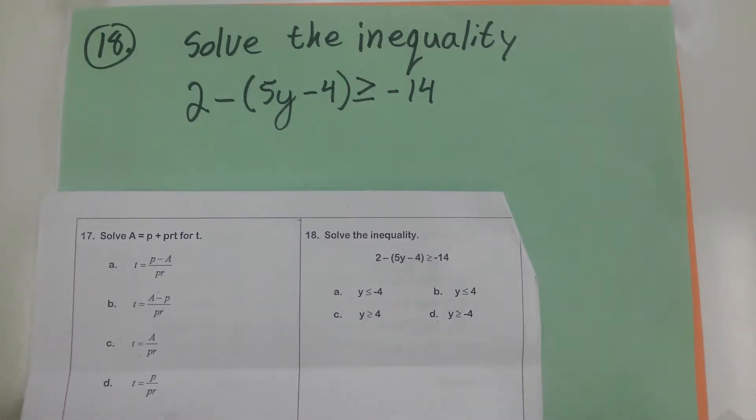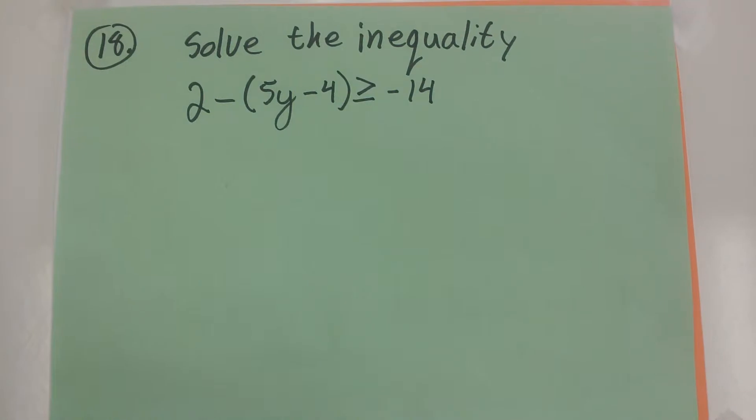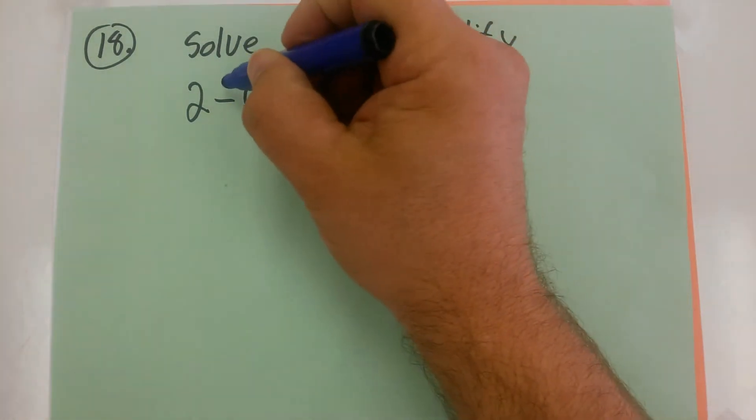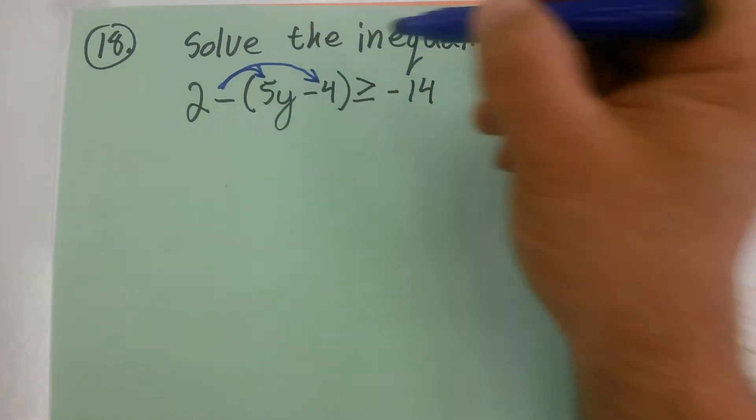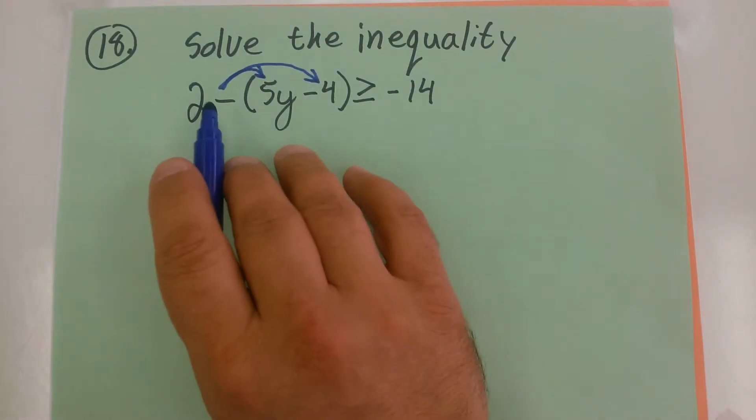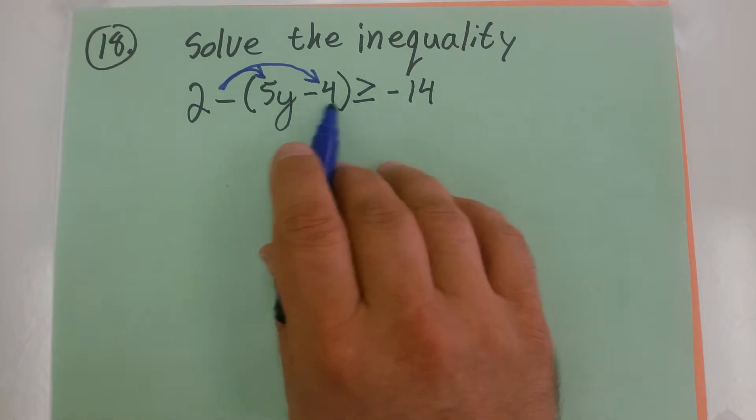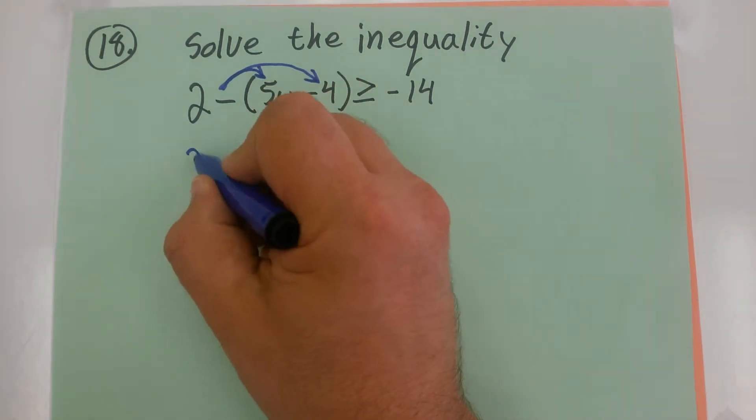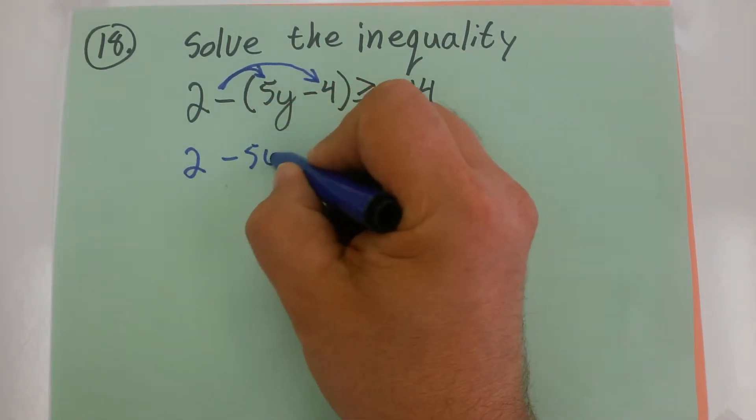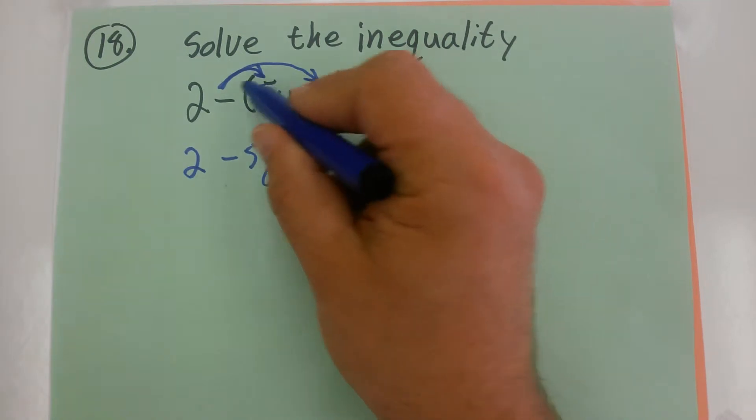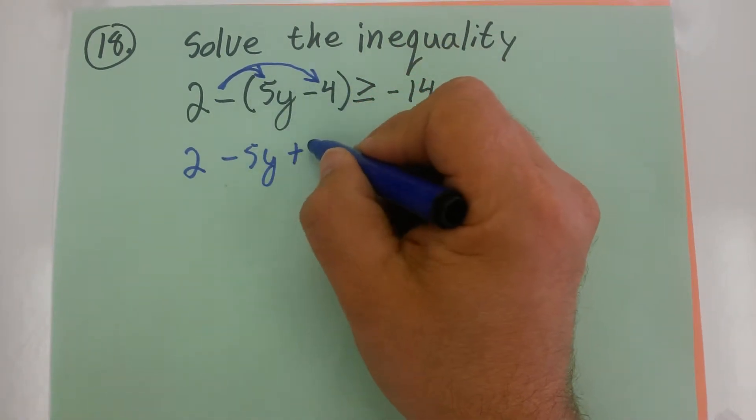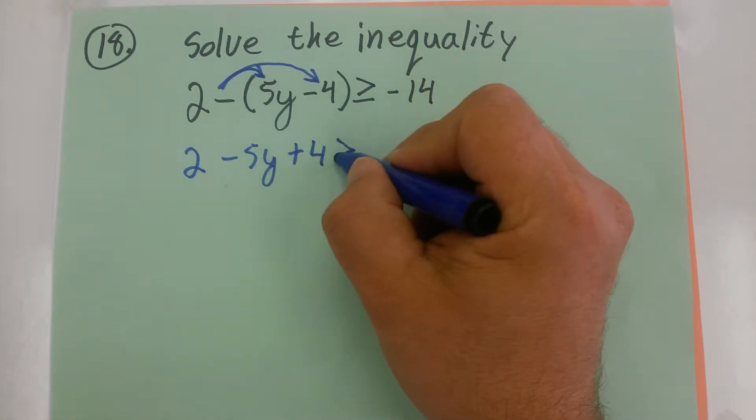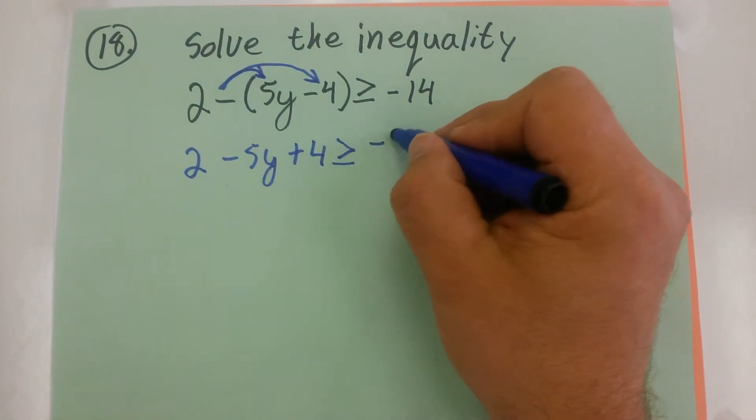So what I'm going to do is I'm going to distribute that negative across these parentheses. And that's one of the biggest mistakes made in any algebra problem is distributing a negative across a quantity. So this is going to give me 2 minus 5Y plus 4, because I have to distribute the negative to the 4 also, is greater than or equal to negative 14.